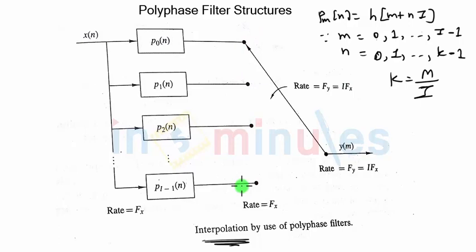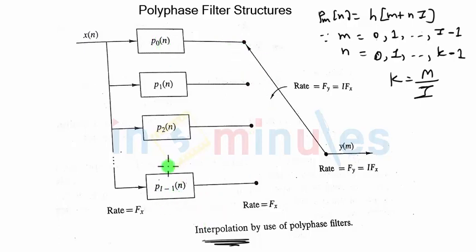The switch will keep on reading one sample from each and every output. On the first time instant, h of 0 and h of 2 will multiply with non-zero values, so that will be the output of P0 of n, and the switch will be connected at the output of P0 of n. On the second time instant, we take output from h of 1 and h of 3, which form the impulse response of the second filter, so the switch moves to the output of the second filter. It will go through all the outputs of various filters and come back to the first one — reading total I samples per cycle. For one input sample, total I samples will be read on the output side, giving a rate of I times fx. That's how interpolation using polyphase filters works.